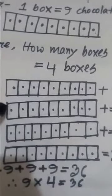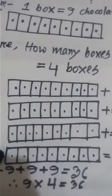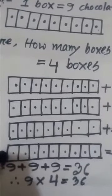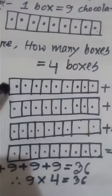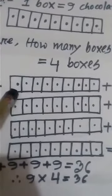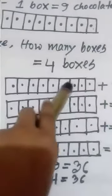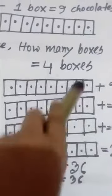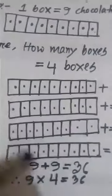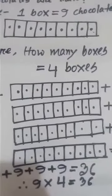So, 9 plus 9 plus 9 plus 9. How many boxes here? 1, 2, 3, 4 — 4 boxes. And in each box, how many chocolates? 1, 2, 3, 4, 5, 6, 7, 8, 9 — 9 chocolates in each box. Total number of boxes: 4 boxes. Each box contains 9 chocolates.